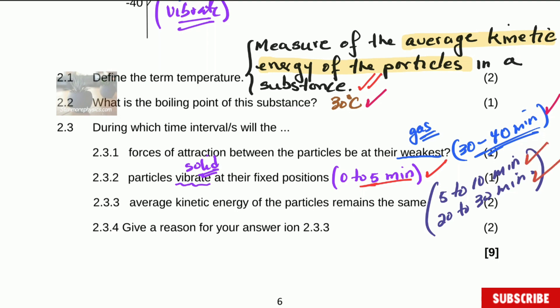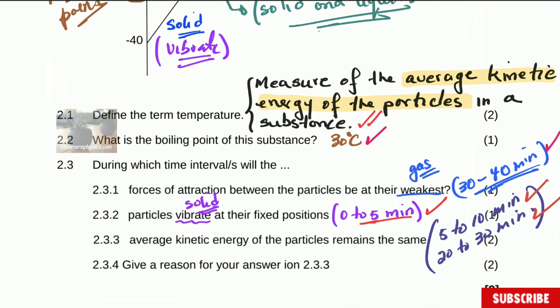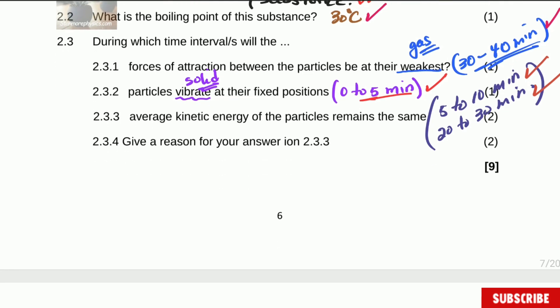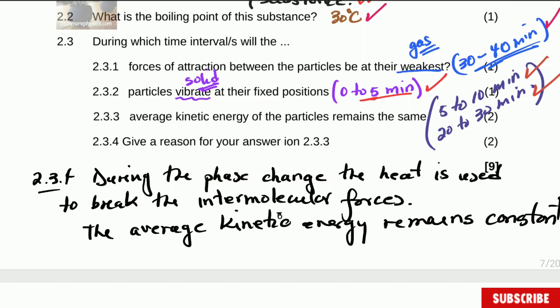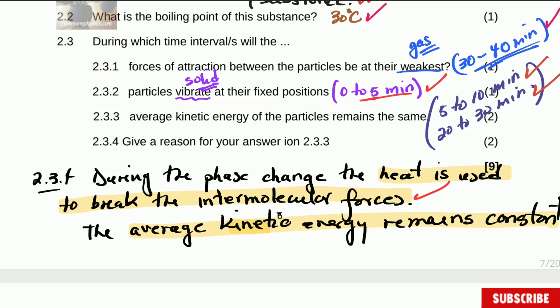One mark for the five to ten, one mark for the 20 to 30. What is happening there is that all the energy was used to break the intermolecular forces. Give a reason for your answer to 2.3.3 — during the phase change, the heat is used to break the intermolecular forces, to break the forces between the molecules, and therefore the average kinetic energy remains constant.